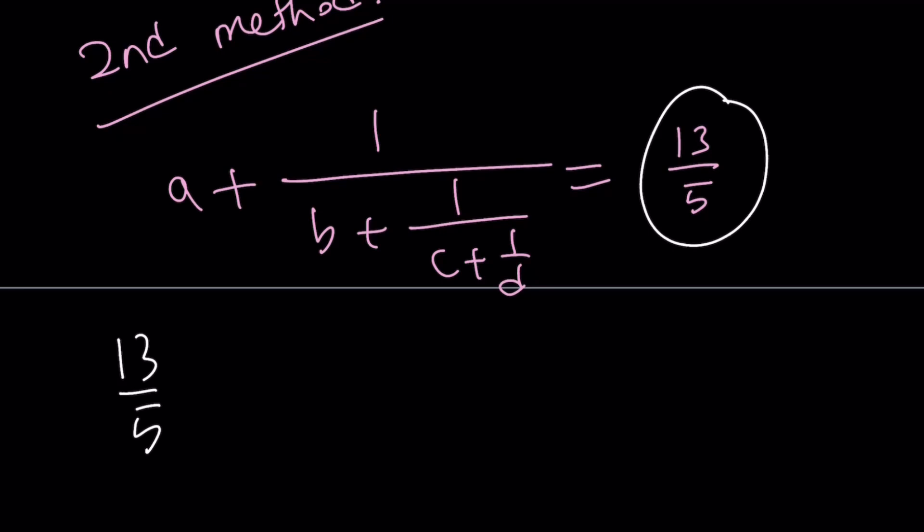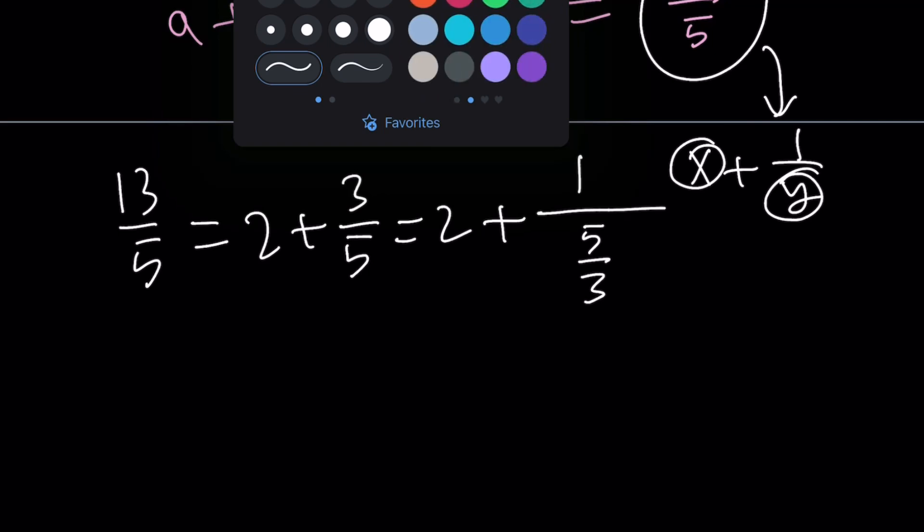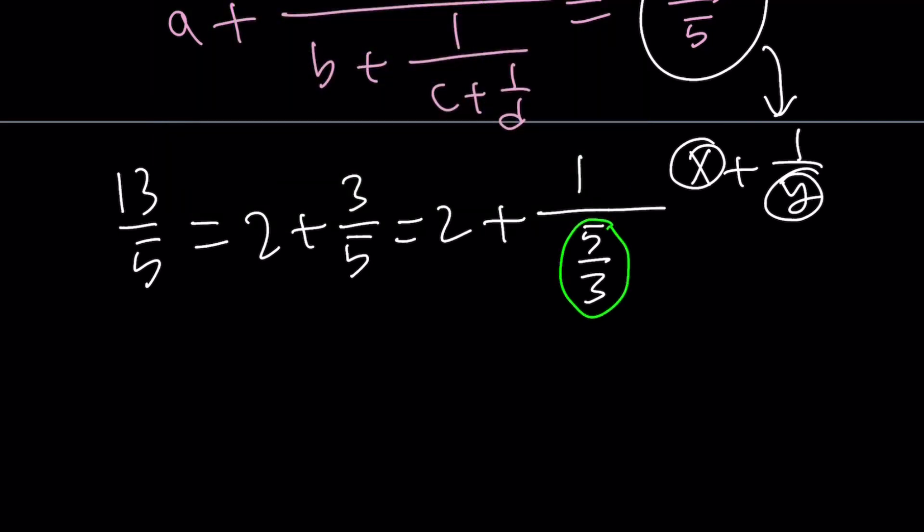Let's take 13 over 5 and break it down. I want to write it as something plus 1 over something. So 13 over 5 can be broken down into mixed numbers. This equals 2 plus 3 over 5. And here's the trick: we have a 1 in the numerator, so we're going to use the reciprocal of 3 fifths, which is 5 thirds. So we write this as 2 plus 1 over 5 thirds. We're going to keep doing this until we get what we want.